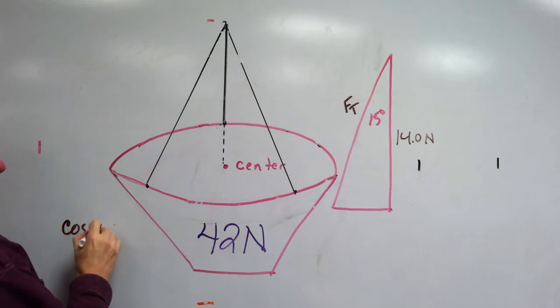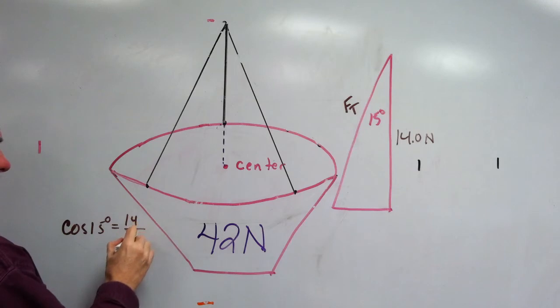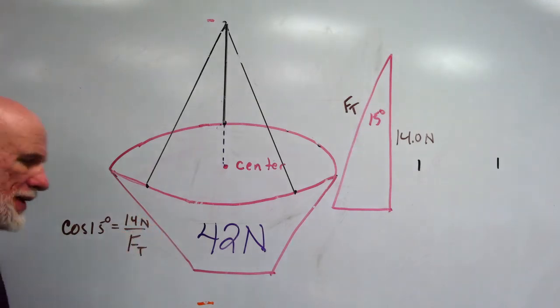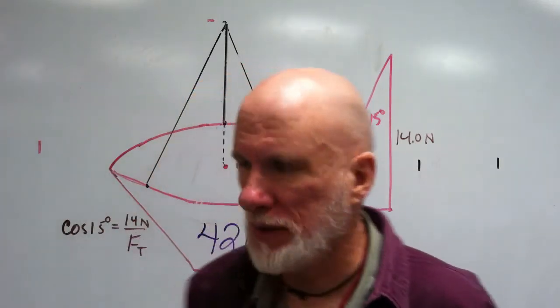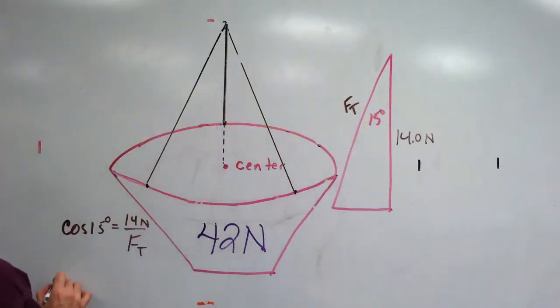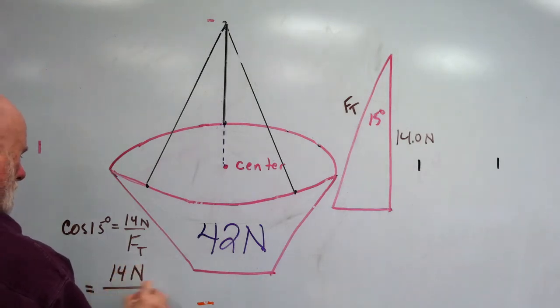15 degrees equals 14 over Ft. That's newtons, right? So, Ft is going to be, Ft equals 14 newtons over cosine 15.